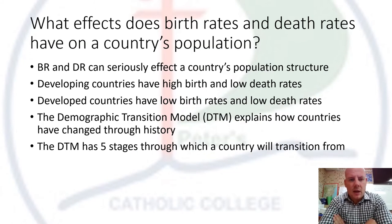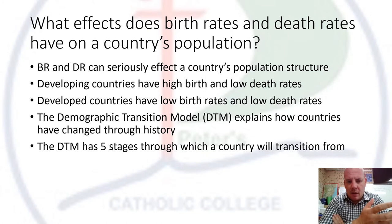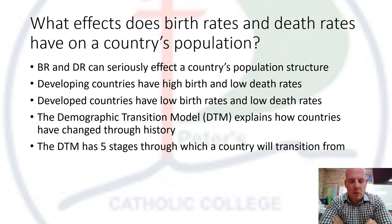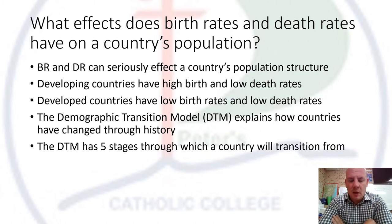Let's look at the effects of birth rates and death rates and what impact that has on a country's population. BR is birth rate and DR is death rate. Birth and death rates can seriously affect a country's population structure. Developing countries have high birth rates and low death rates. Developed countries have low birth rates and low death rates. The demographic transition model, or DTM, explains how countries have changed through history and has five stages which each country would transition through.